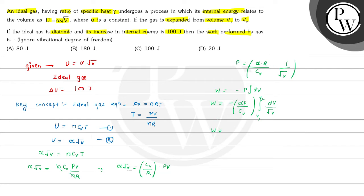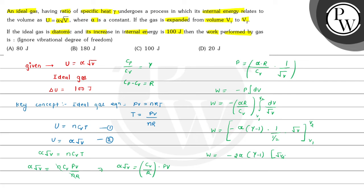After integration, W comes out to be: the constant alpha R divided by Cv can be simplified using the relations Cp divided by Cv equals gamma and Cp minus Cv equals R, giving alpha times (gamma minus 1). The integral of dV over the square root of V gives 2 times the square root of V, evaluated from V1 to V2. So W equals minus 2 alpha (gamma minus 1) times (square root of V2 minus square root of V1).